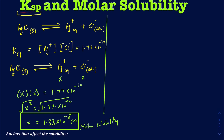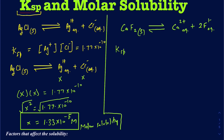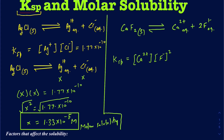Now let me take another example where your molar solubility is not necessarily the same as the concentration. Suppose I have CaF₂ solid. When I write the equilibrium, it breaks into Ca²⁺ and 2F⁻ aqueous. When writing the Ksp expression for this one, it's going to be the concentration of Ca²⁺ times the concentration of fluoride squared. Remember, whatever the coefficients you have become the power — that's what we do in equilibrium constant expressions.